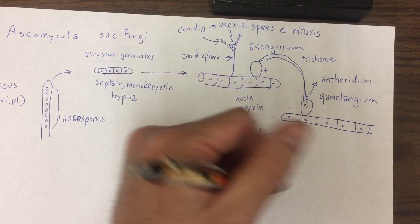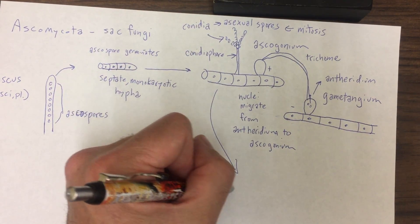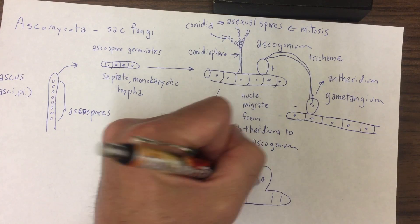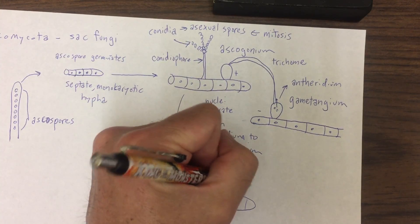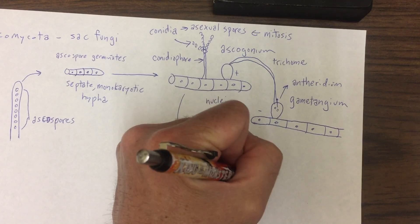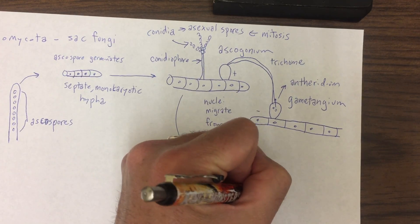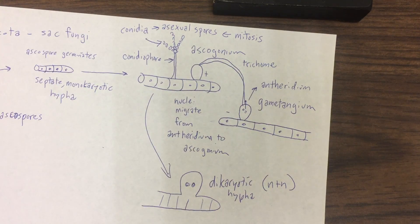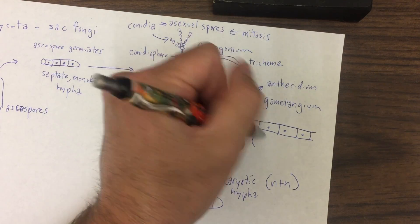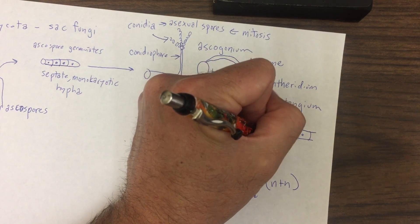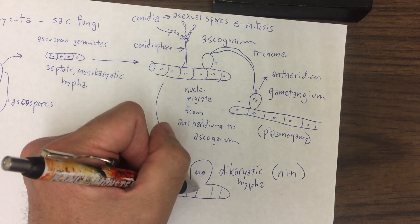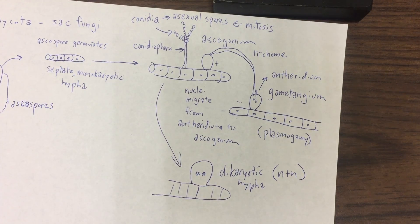So the nuclei migrate, and we end up with a dikaryotic hypha with two nuclei. That's plasmogamy. So we've got two nuclei in this cell, and they haven't fused yet. We haven't gone through karyogamy, or nuclear fusion.